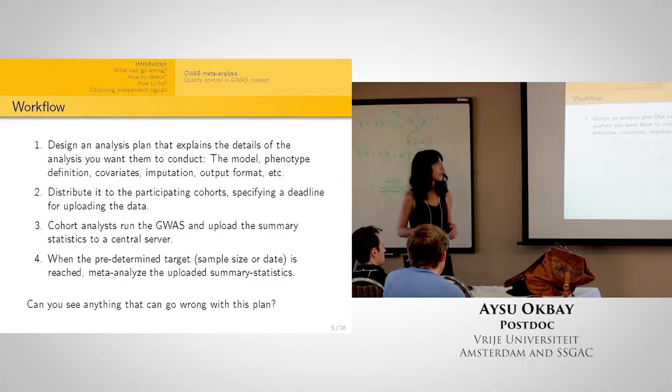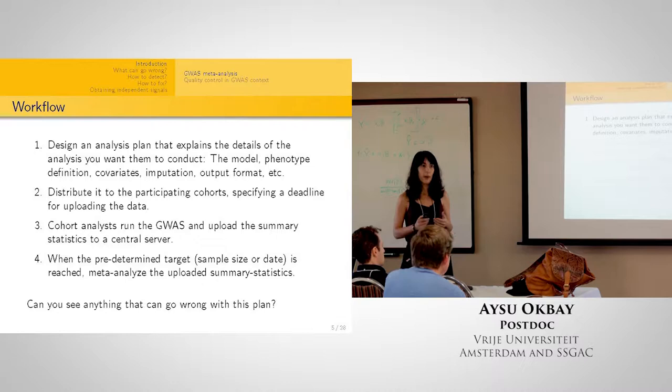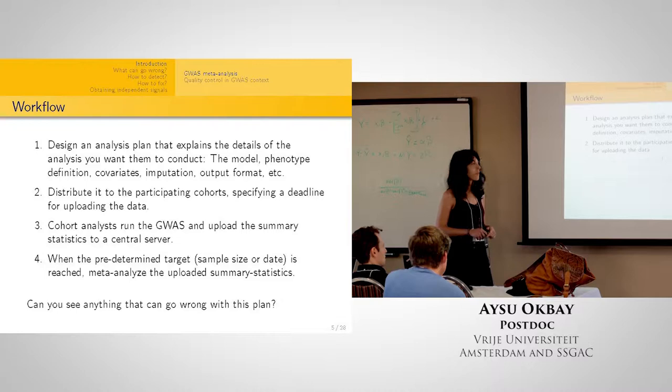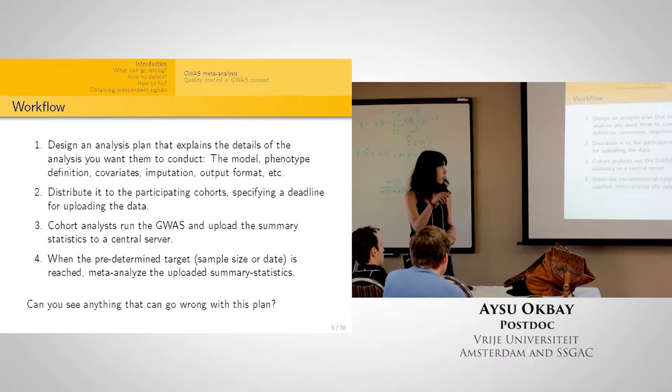The workflow is as follows: you first design an analysis plan specifying everything — the model, phenotype definition, covariates, imputation panel, output format, and other details. Best practice is to pre-register that analysis plan so you don't change things later depending on the results. You then distribute this plan to the cohorts, cohort analysts run the GWAS based on that plan, and upload results to a central server for meta-analysis.